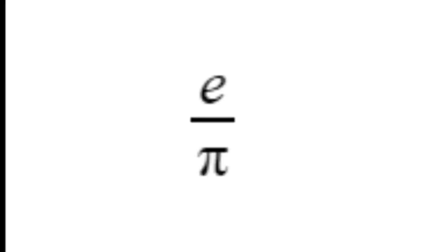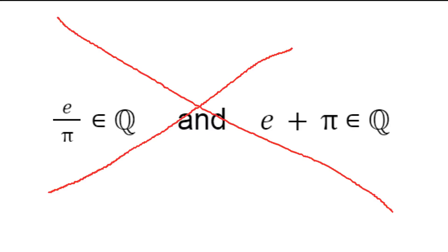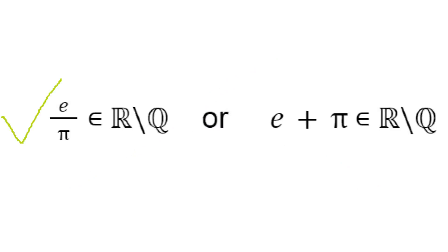Another interesting fact is that e plus pi and e divided by pi can't both be rational. That is, one of them must be irrational. I'll prove it quickly.